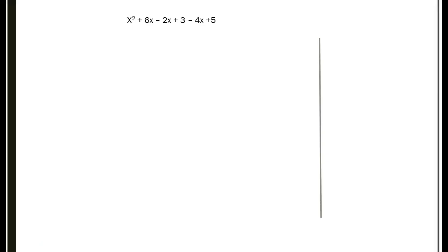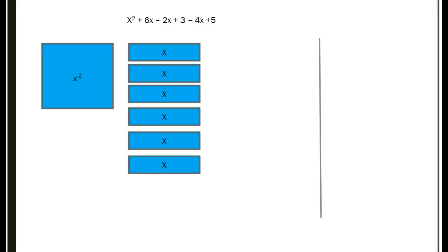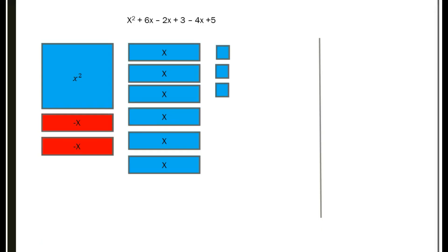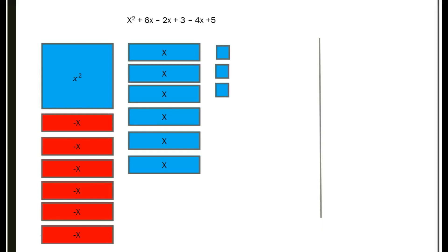Let's try another one. I have x squared plus 6x minus 2x plus 3 minus 4x plus 5. Let me lay this out: 1 x squared, six x's, two negative x's, three unit ones, then four more negative x's — they're a bit mixed around — and five positive units. Go ahead and take the time to do this yourself, then come back and check your answers.